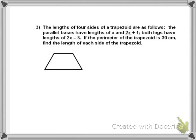The length of the four sides of a trapezoid are as follows. The parallel bases have length of X and 2X plus 1. The legs, which is the other two sides that are not parallel, would be 2X minus 3. And they're both equal. And then my perimeter is 30. So, I just simply add my sides.